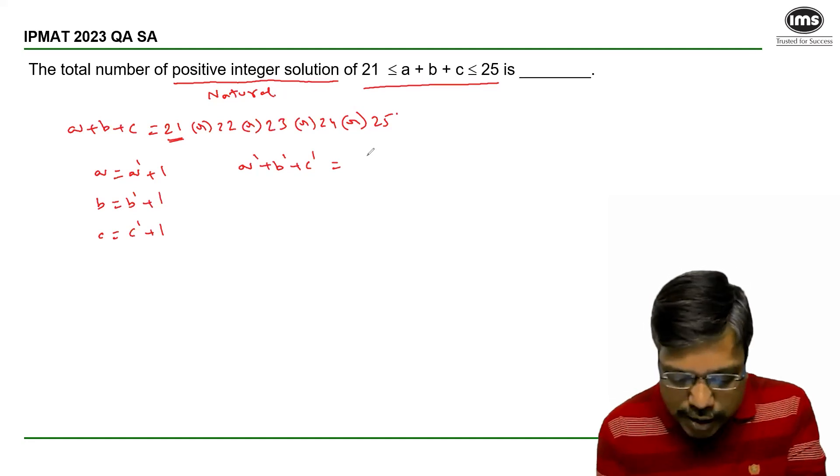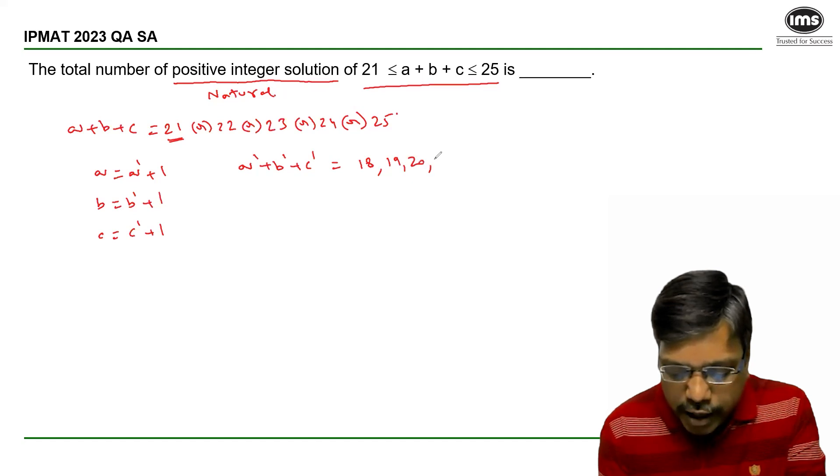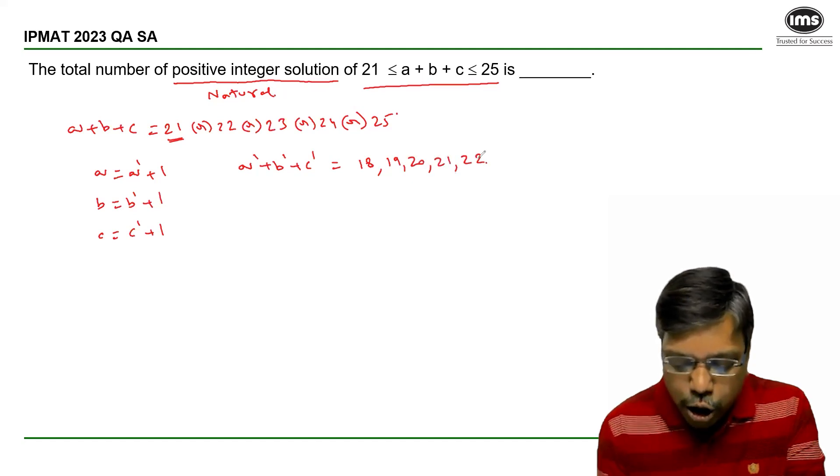If I subtract 3 on both sides, then it becomes 18 or 19 or 20 or 21 or 22.